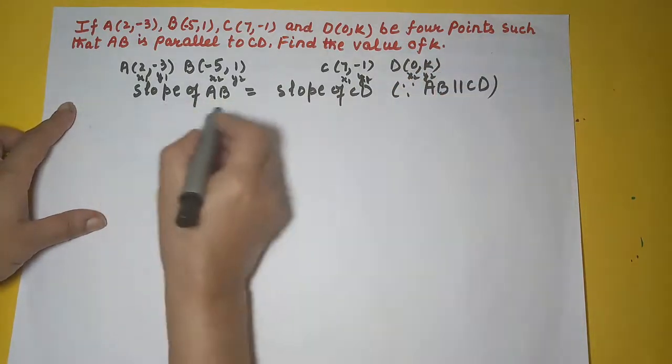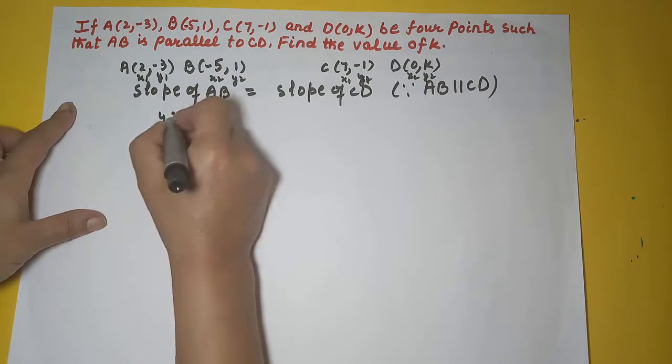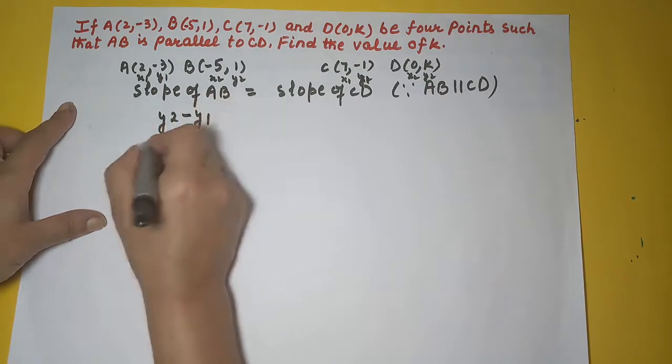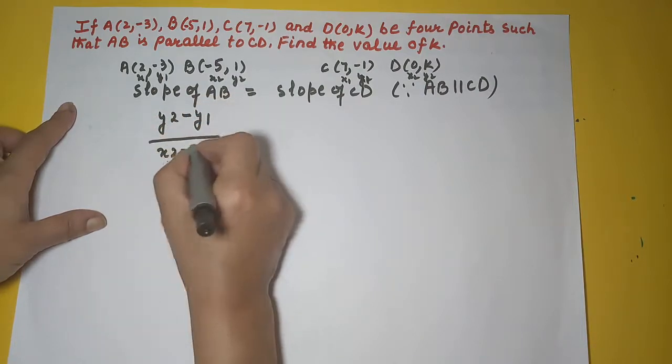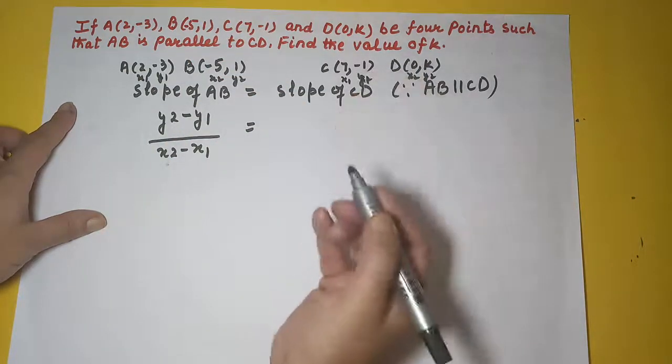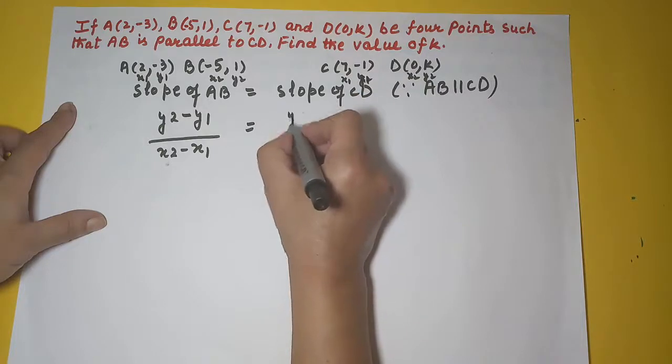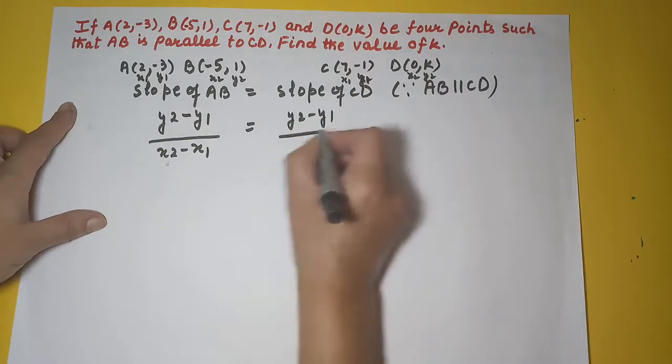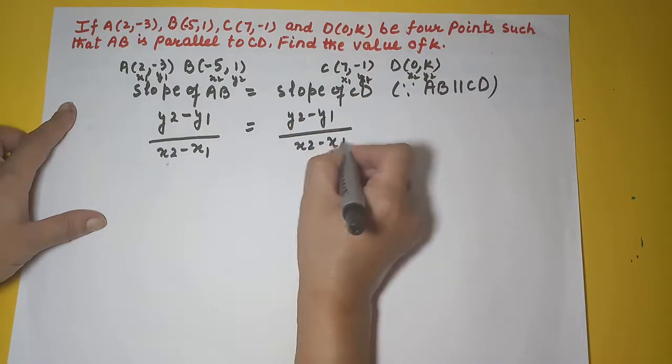And we know that slope is to be calculated as Y2 minus Y1 upon X2 minus X1 when two points are given. This is how you calculate the slope. Same here, Y2 minus Y1 upon X2 minus X1.